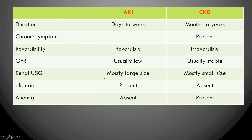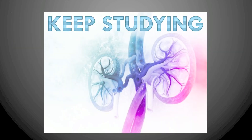GFR in AKI is low and progressively declining if not intervened; in CKD it is stably low. Renal ultrasound in AKI typically shows an enlarged kidney, whereas in CKD the kidney is shrunken. Oliguria is present in AKI, while polyuria is common in CKD. Anemia is generally absent in AKI because erythropoiesis is not yet impaired, but is commonly present in CKD due to prolonged loss of erythropoietin regulation by the kidney.